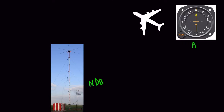The NDB is a beacon on the ground and the ADF is the equipment we have in the aircraft. NDB stands for non-directional beacon and ADF stands for automatic direction finder. An NDB transmits signals in all directions from the ground — that's why it's known as a non-directional beacon. When the airborne equipment, the ADF, is tuned to an NDB's frequency, it indicates the direction of the NDB.